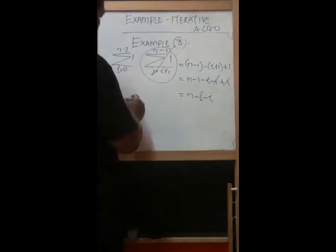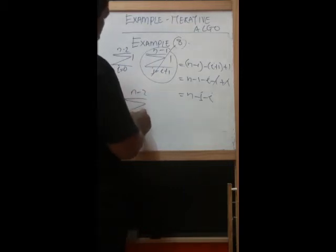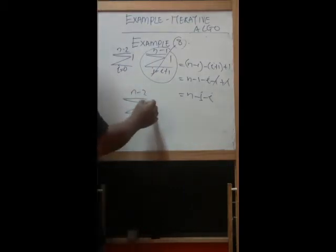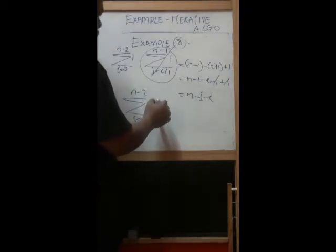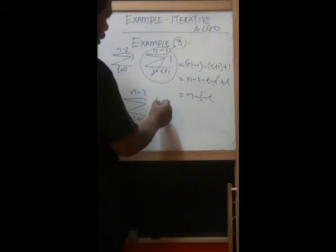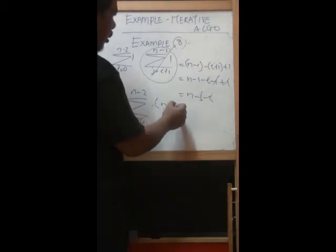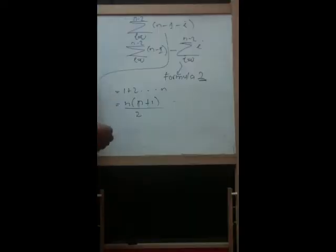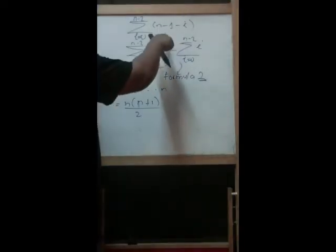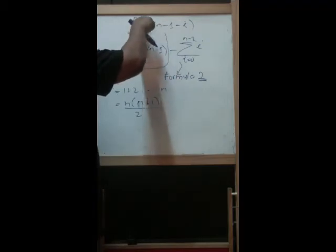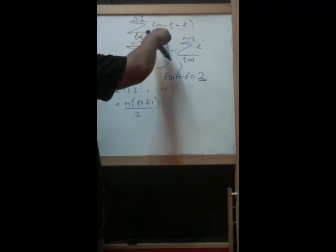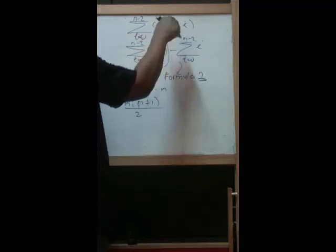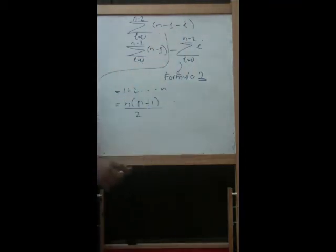We go back to the outer summation. We now have the summation from i equal to 0 to n minus 2 of (n minus 1 minus i).